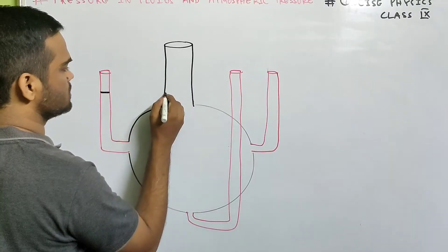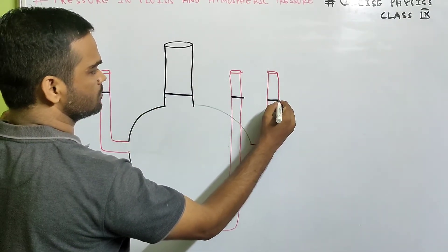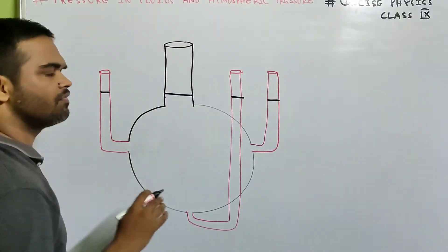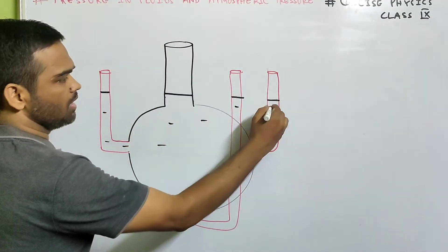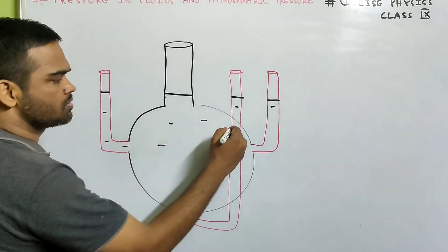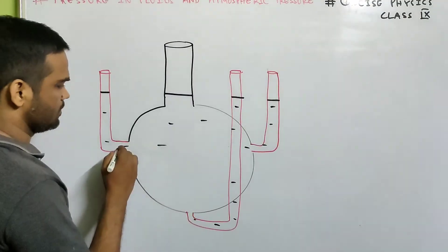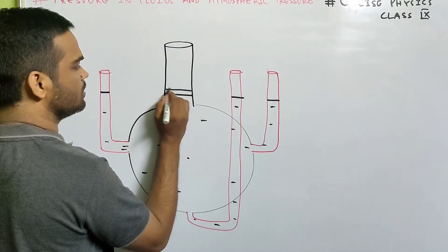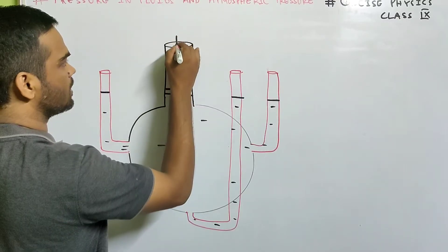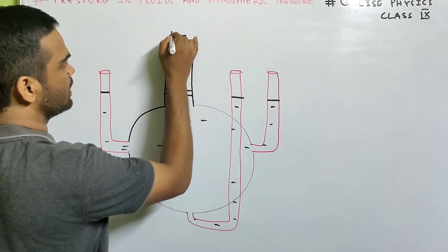Suppose till this height. Till this height we have filled in water. Now the height will be same in all the tubes because water seeks its own level. Now we keep a piston over here and airtight piston. We take piston and airtight piston.